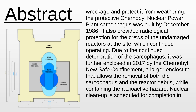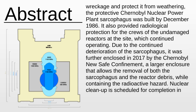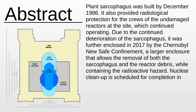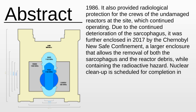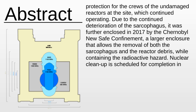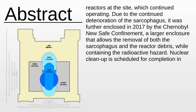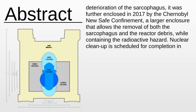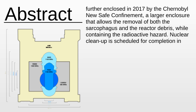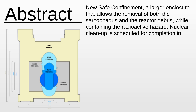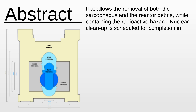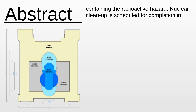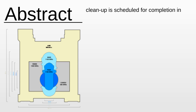To reduce the spread of radioactive contamination from the wreckage and protect it from weathering, the Chernobyl nuclear power plant sarcophagus was built by December 1986. It also provided radiological protection for the crews of the undamaged reactors at the site, which continued operating. Due to the continued deterioration of the sarcophagus, it was further enclosed in 2017 by the Chernobyl New Safe Confinement, a larger enclosure that allows the removal of both the sarcophagus and the reactor debris, while containing the radioactive hazard. Nuclear cleanup is scheduled for completion in 2065.